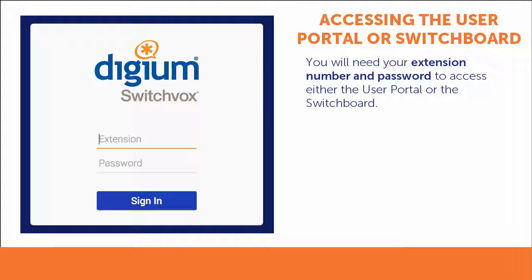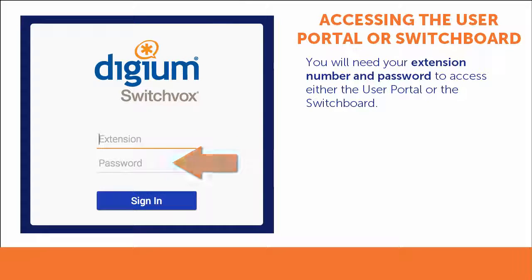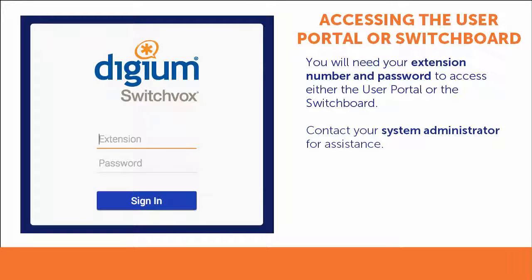To access the user portal or switchboard, you will need your extension number and password. If you do not have this information, contact your system administrator.